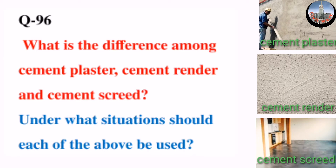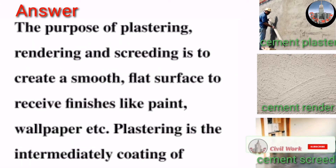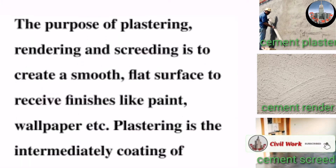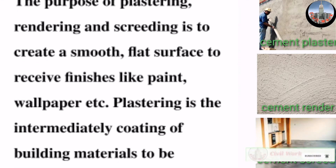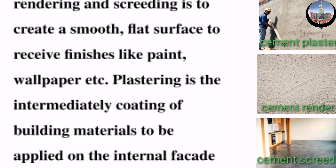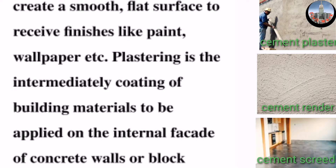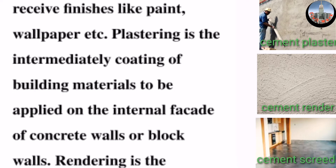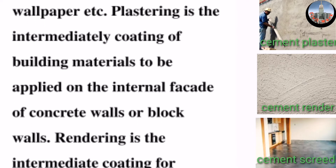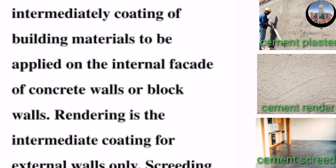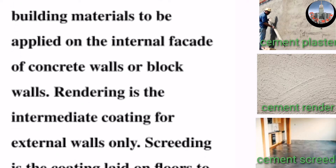Question number 96: What is the difference among cement plaster, cement render, and cement screed? Under what situation should each of the above be used? The purpose of plastering, rendering, and screeding is to create a smooth, flat surface to receive finishes like paint, wallpaper, etc. Plastering is the intermediate coating of building materials to be applied on the internal facade of concrete walls or block walls.